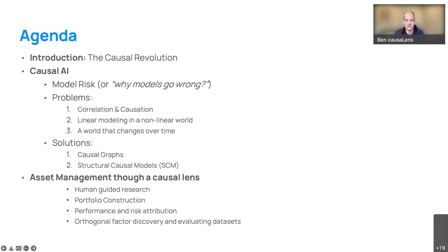There's a lot to cover. I'm going to start very light — literally with what causal AI is, with pictures and definitions. We can get into the maths, but given the time I just want to make sure we spend a good chunk of time on where we're seeing causal AI helping asset managers, then leave plenty of time for questions. I'll start with an introduction, talk about model risk, causal graphs and causal models, and then a few examples at the end on asset management.